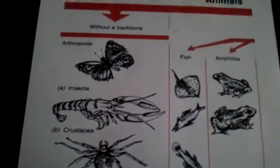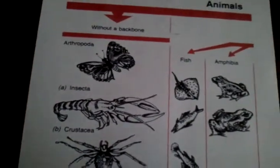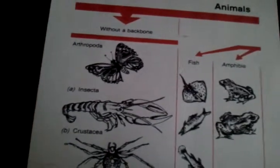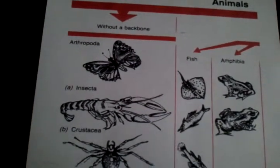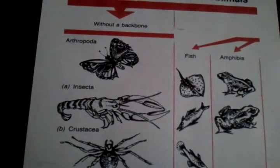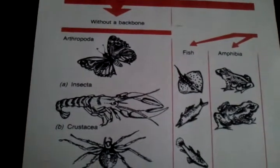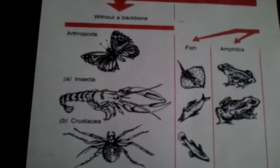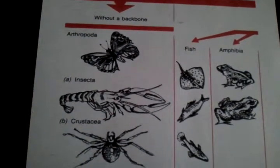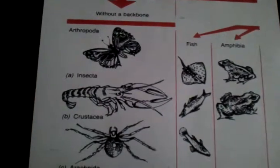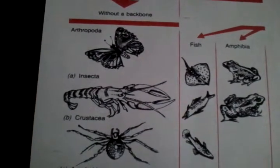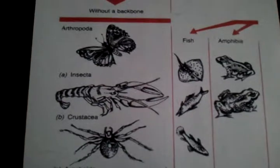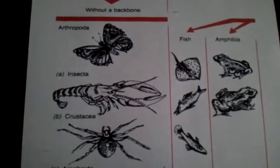Vertebrates have a backbone and have a bone system called the endoskeleton, which means all the bones are inside the skin. Invertebrates do not have a backbone and they have a hard outer shell to protect all their organs. Thank you.